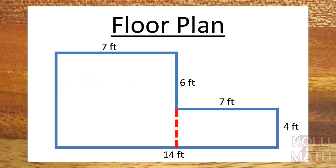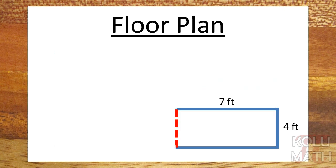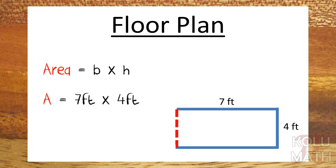All right, so now we've got 7 and 4. We can go ahead and use the equation. Area is base times height, so area is 7 feet times 4 feet, and the area is 28 feet squared.